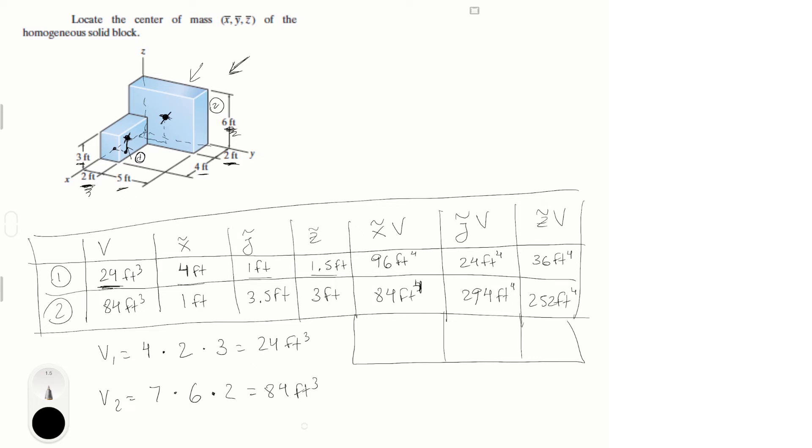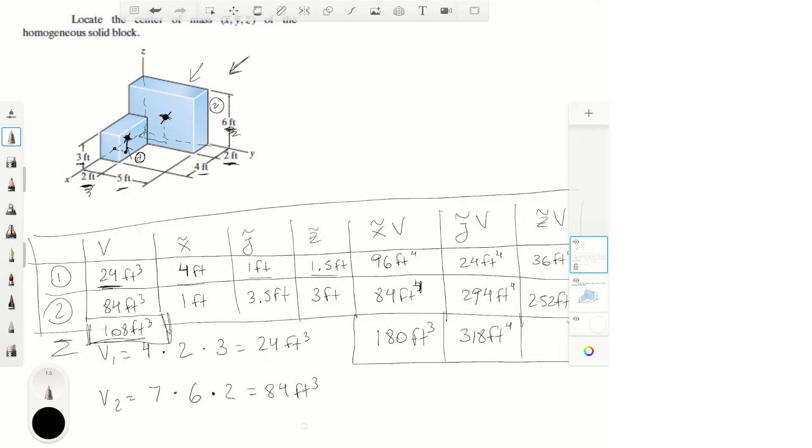And all you gotta do now is... I didn't leave enough room here to write my sum, let me make some room. This is the sum of 24 plus 84, which is 108 cubic feet, and this is the sum of each of the multiplication columns, which is 180 cubic feet, 318 (again I keep saying cubic feet, this is to the fourth), and 286 feet to the fourth. It's important that you get your units right because that's how you know that your equations are in the right direction, because they're going to cancel out and give you the right answer.